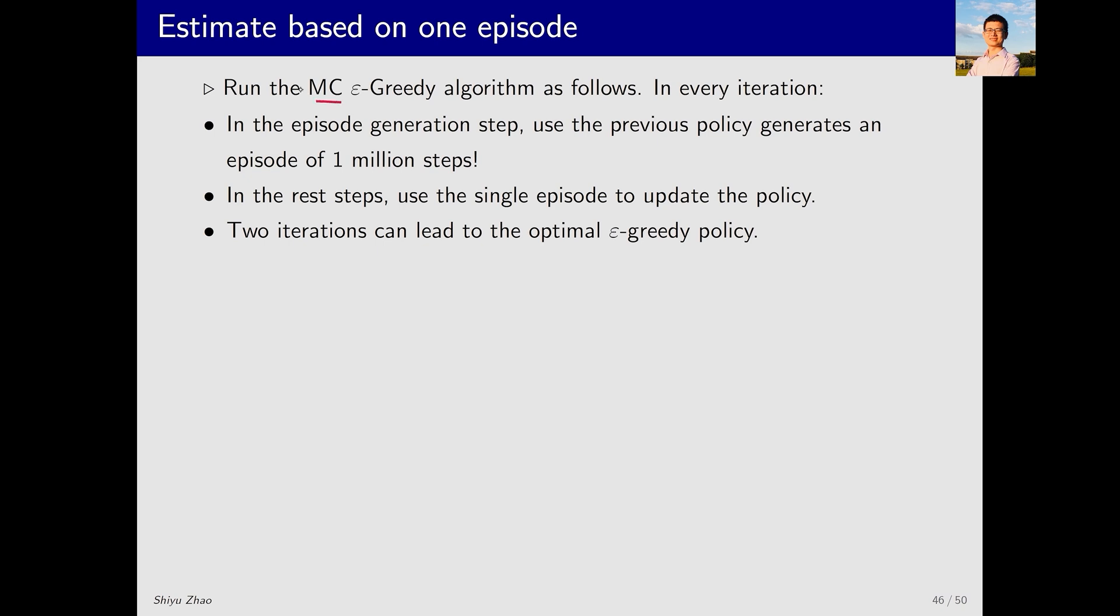Now let's run the MC epsilon greedy algorithm as follows, and observe the resulting optimal policy. In the next example, we do the following in every iteration. I generate an episode using the current epsilon greedy policy, but this episode is exceedingly long, consisting of one million steps. Then, I use this episode to update the action values corresponding to all state action pairs, and also update the policy.